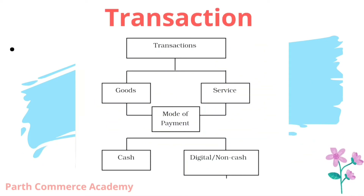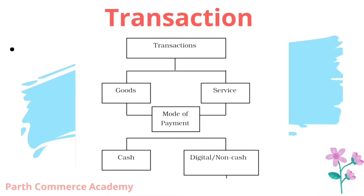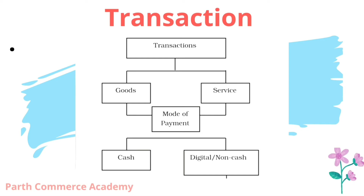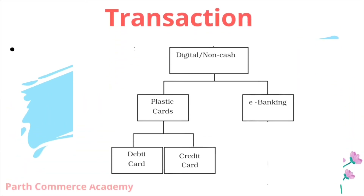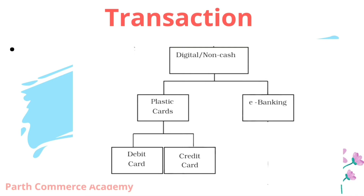Whenever we are doing any transaction — means purchasing goods or services — at that time we have to pay the money. So we have two options here. First is that we can pay cash for that transaction, or the second option is we can use digital cash or non-cash mode. When we are talking about digital mode or non-cash mode, we have another two options: we can pay by debit card or credit card, which means with the help of a plastic card we can pay.